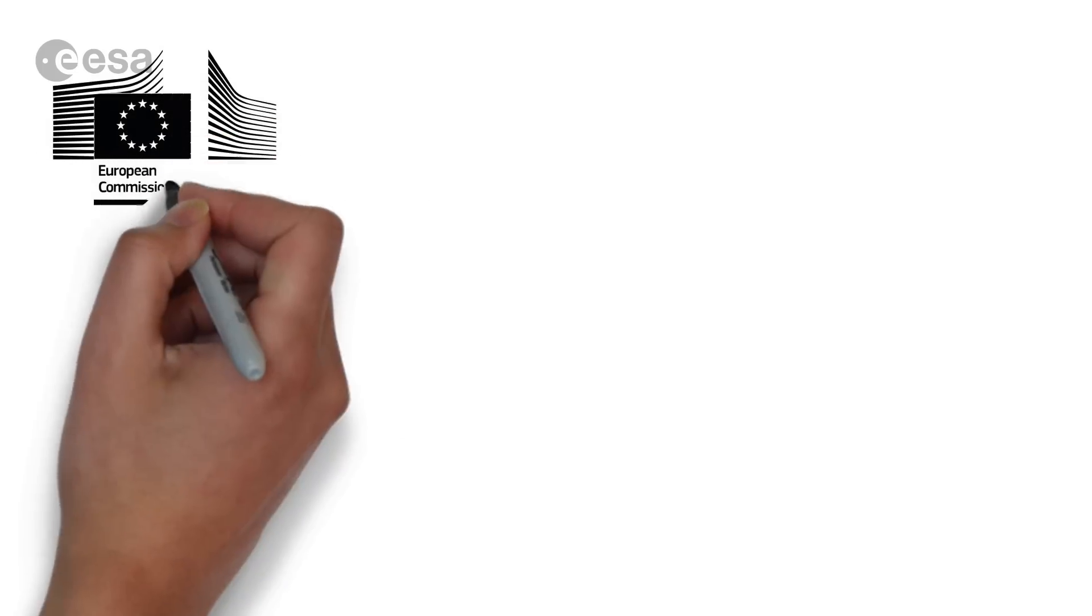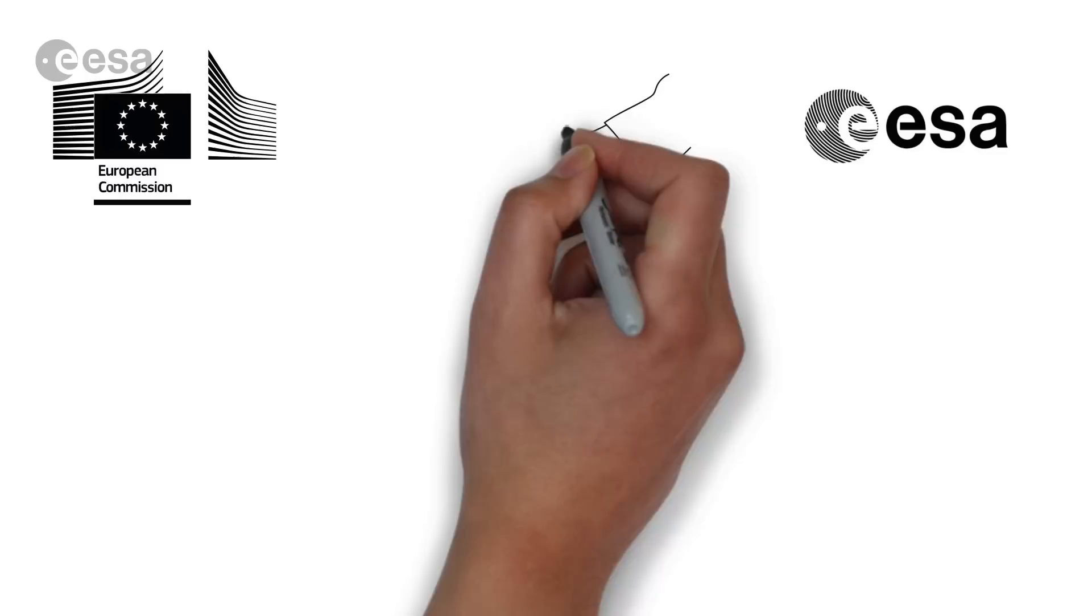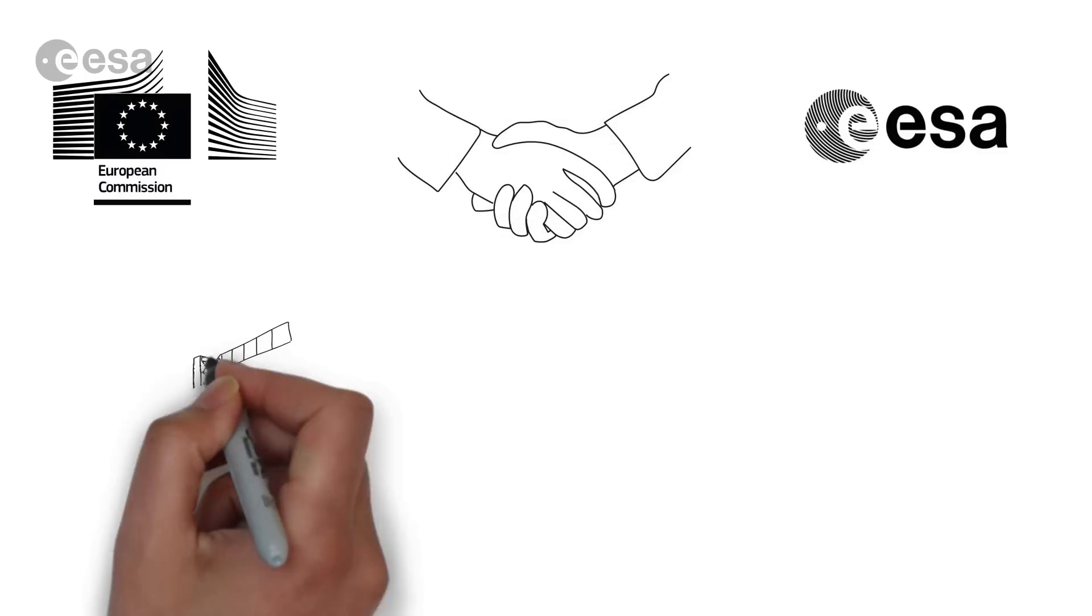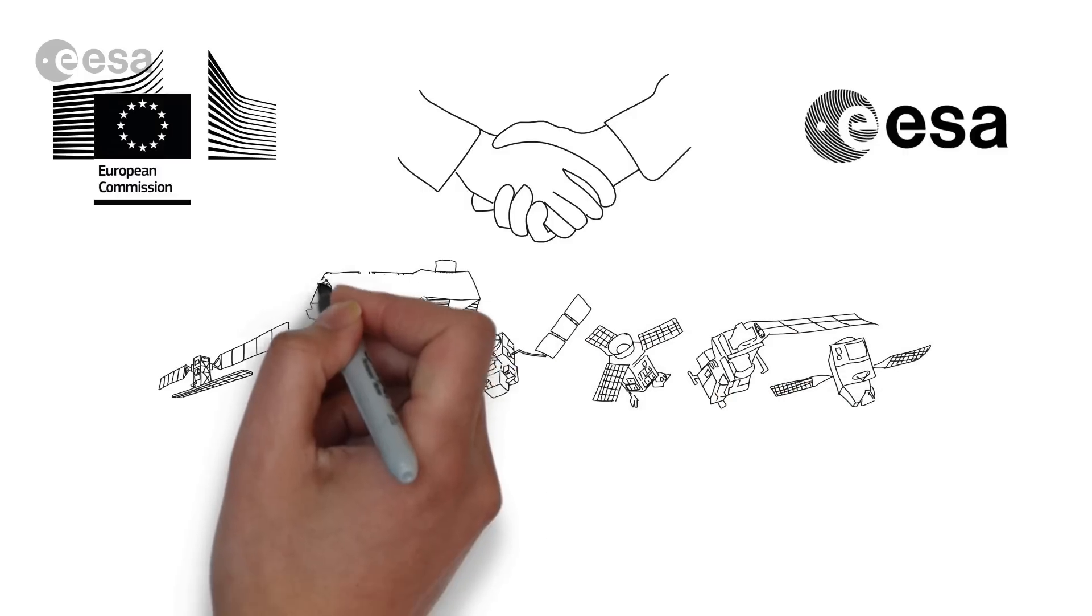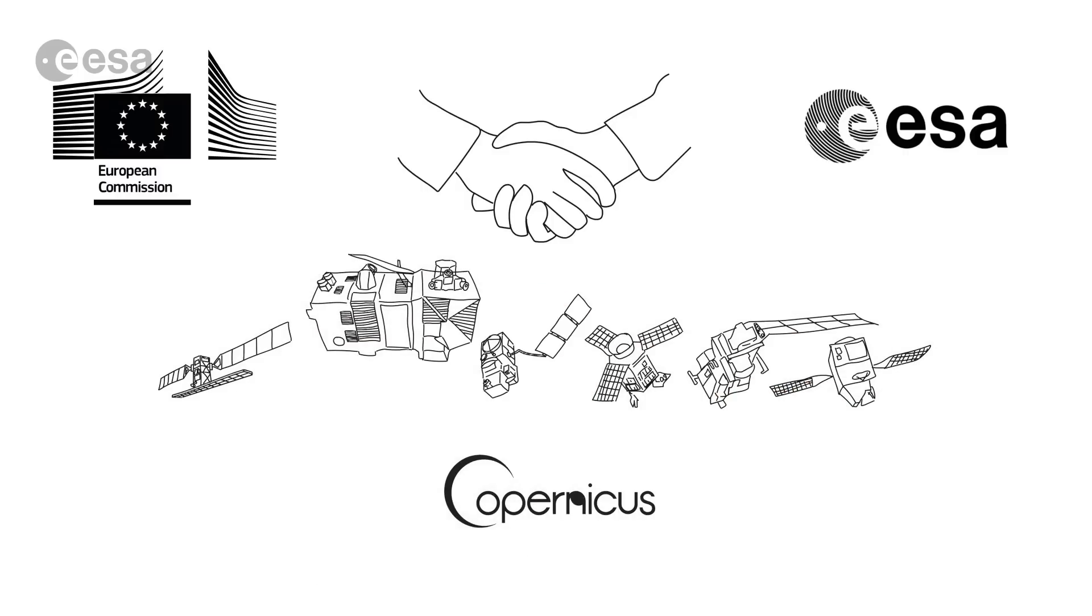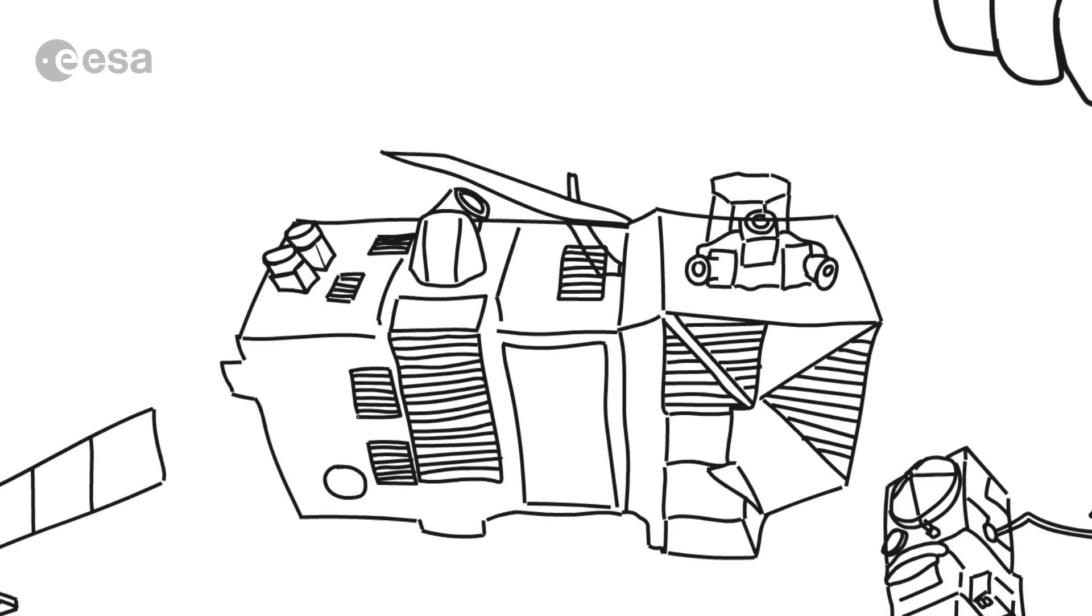This is the incentive for the European Commission and the European Space Agency to join forces and operate the most sophisticated Earth observation satellite fleet in the world, called Copernicus. The Sentinel-2 satellite is just one of them. In fact, a very good one, to make our world a better place.